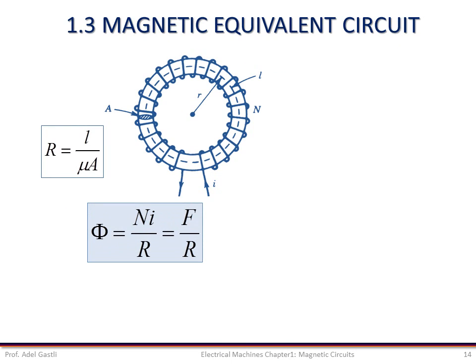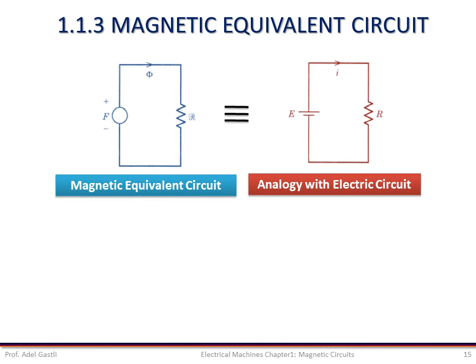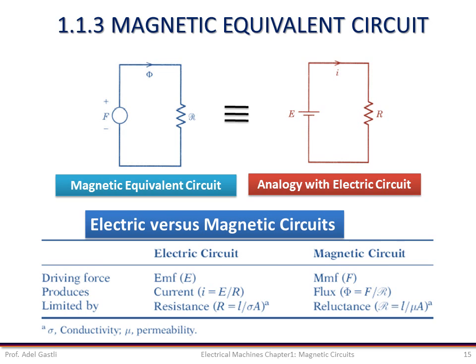These equations show that the driving force in the magnetic circuit is the magnetomotive force MMF, F equals NI, which produces a flux phi against a magnetic reluctance R. The toroid can therefore be represented by a magnetic equivalent circuit analogous to an electric circuit: the EMF E corresponds to the MMF F, the current I corresponds to the magnetic flux phi, and the resistance R corresponds to the reluctance R. Electric conductivity in electric circuits is equivalent to magnetic permeability in magnetic circuits. Through this analogy, electric circuit laws can be applied to the magnetic equivalent circuit.